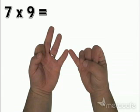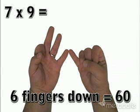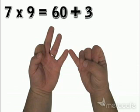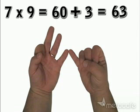Now, any fingers that are down each count as 10. We have 6 fingers down, so that's a total of 60. Now, the number of fingers left standing on each hand are multiplied together, which is 3 by 1, which is 3. Adding together our first total of 60 to our multiplication result of 3, we get 63. And yes, 7 times 9 is 63.